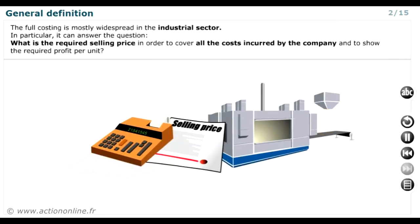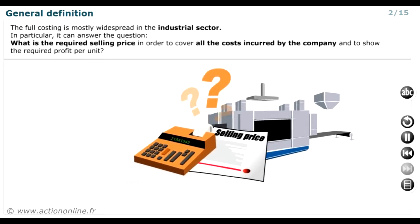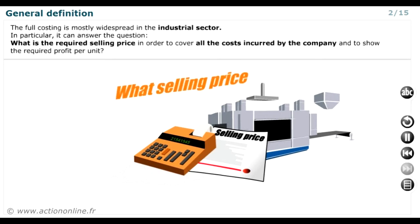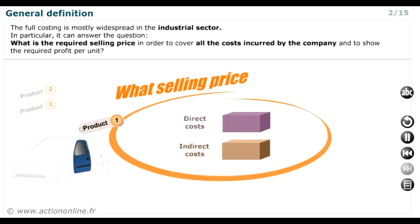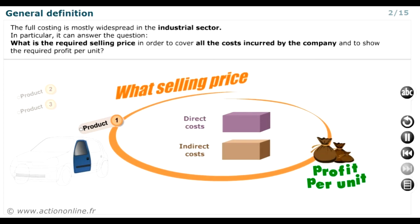Full costing or absorption costing is more widespread in a production economy. In particular, it answers the question: what selling price should be set to cover all costs incurred by the company and produce the desired unit profit? Full costing or absorption costing is based on an analysis by product or service.